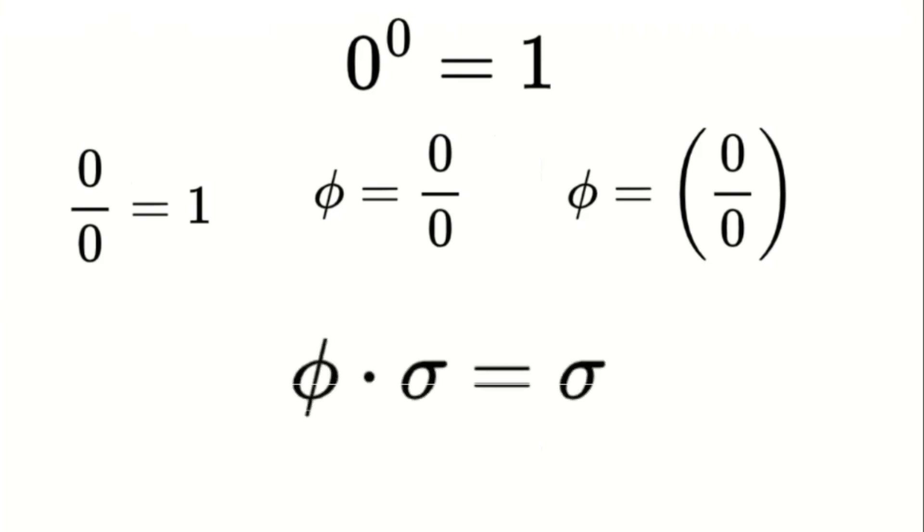Phi times sigma equals sigma. This rule dictates how our two fundamental singularity units, phi (0 divided by 0) and sigma (1 divided by 0), interact under multiplication.